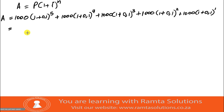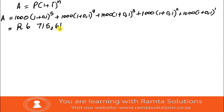I found my answer and my answer is six thousand seven hundred and fifteen rand and sixty-one cents. So this is how much Lesedi gets after five years if she invests at the beginning of each term.